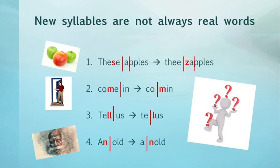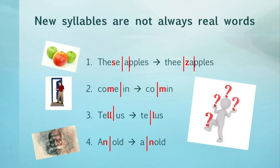So far I've shown how re-syllabification can make two real words sound like two completely different real words. However, more often the new syllables are not real words, which can also be confusing. For example: 'these apples' can sound like 'the zapples'; 'come in' can sound like 'ca-min'; 'tell us' can sound like 'tel-lus'; and 'an old' can sound like 'a-nold'.